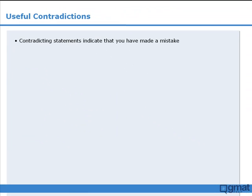To summarize: if you are tackling a data sufficiency question and the two statements appear to contradict each other, then that means you must have made a mistake somewhere, and you will have to go back and recheck your calculations.